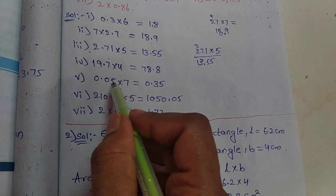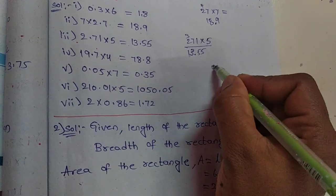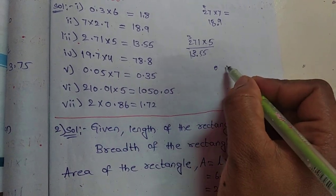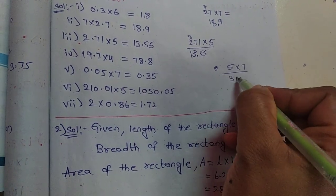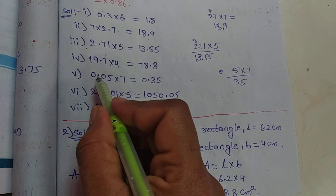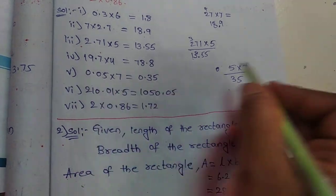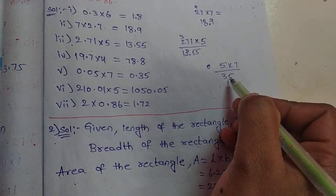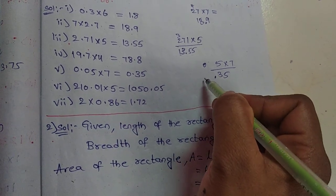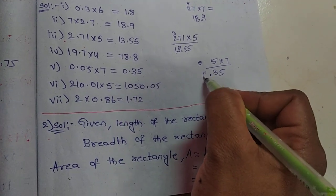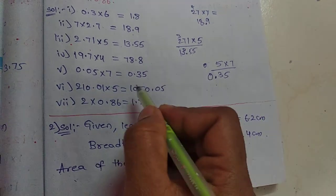Here 0.05 into 7. This is the sum: 0.05 times 7. 5 times 7 is 35. Here decimal point is after two digits, so here also we should count two digits from the right side: 1, 2. Here we have no digits, so we write 0. The answer is 0.35.